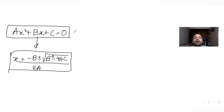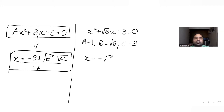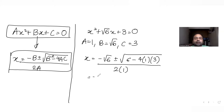For our equation x² + √6·x + 3 = 0, comparing with the general form: a = 1, b = √6, c = 3. So x = (−√6 ± √(6 − 12)) / 2 = (−√6 ± √(−6)) / 2.